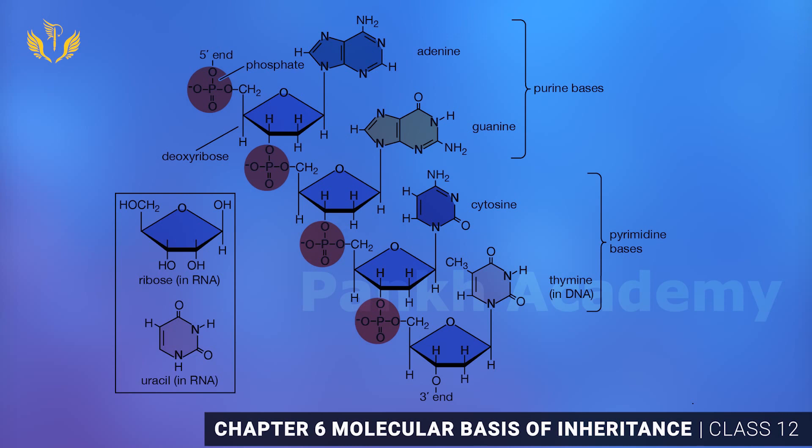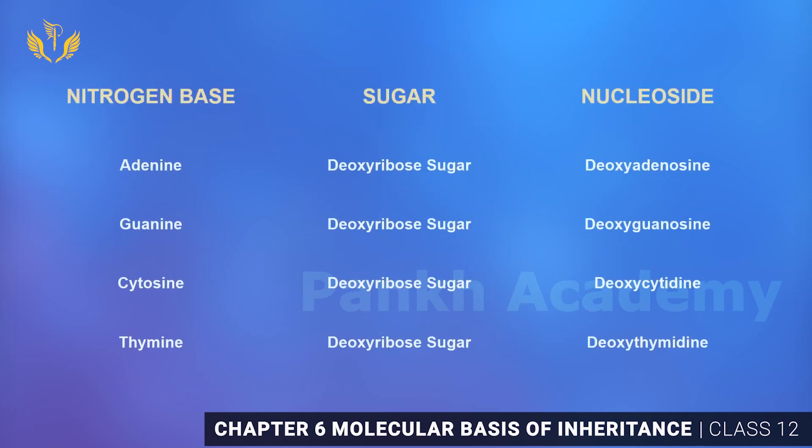Now you will see this table. The columns are: nitrogenous base, sugar, and nucleoside. In DNA, the nitrogenous bases are adenine, guanine, cytosine, and thymine. The sugar present in all four is deoxyribose sugar. The corresponding nucleosides are deoxyadenosine, deoxyguanosine, deoxycytidine, and thymidine. Remember this table — you need to know which sugar and which nucleoside is present in DNA.